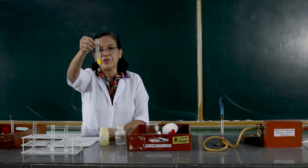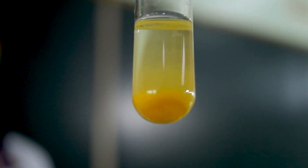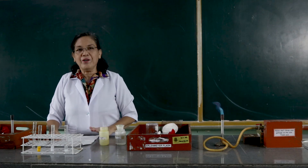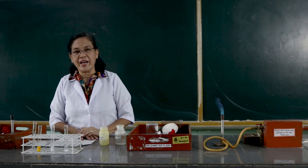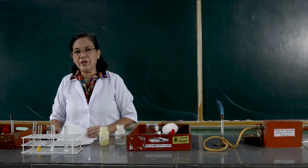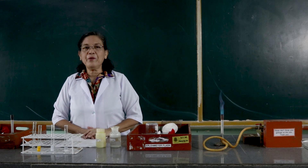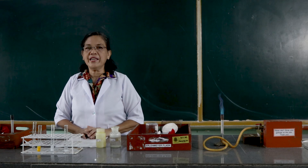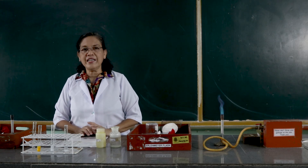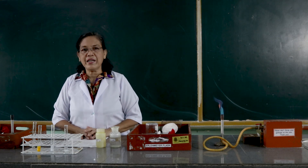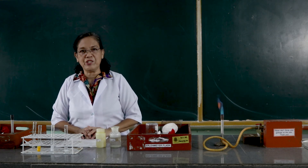I want you to observe what happened. So those are the four types of chemical reactions that I have demonstrated to you. What I would like you to do next is write the chemical equation representing the chemical reactions of those types of chemical reactions which I have demonstrated.